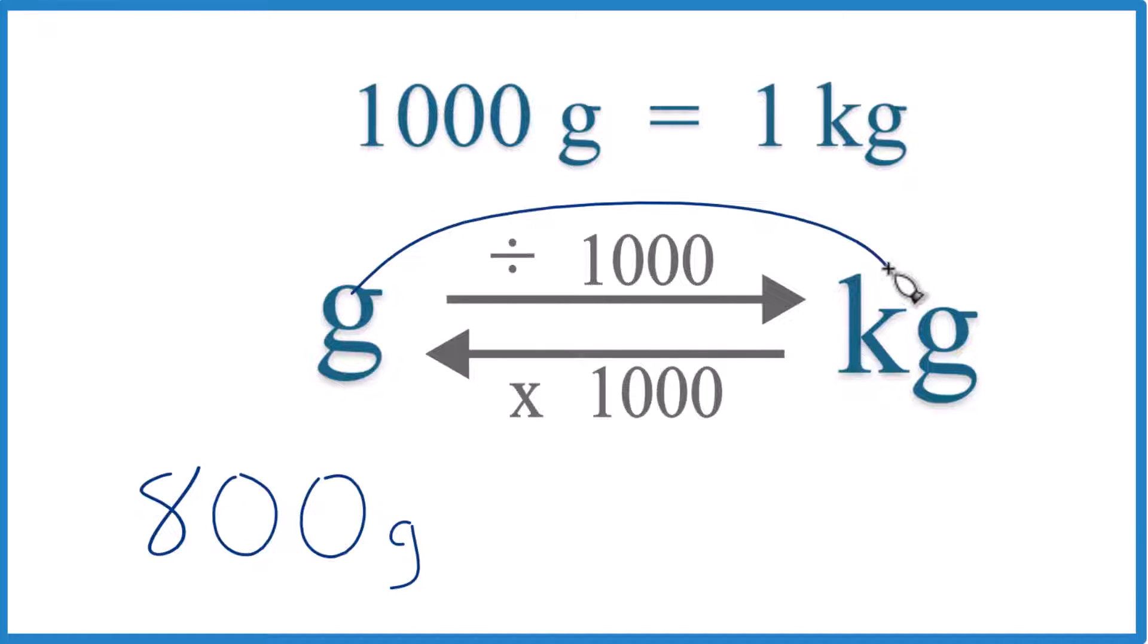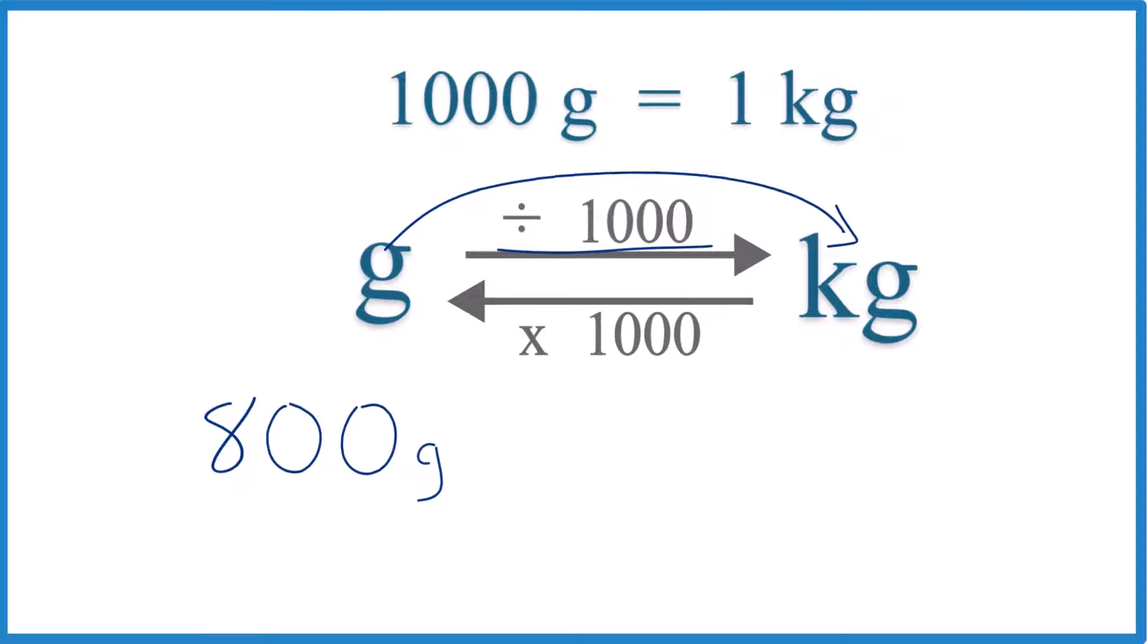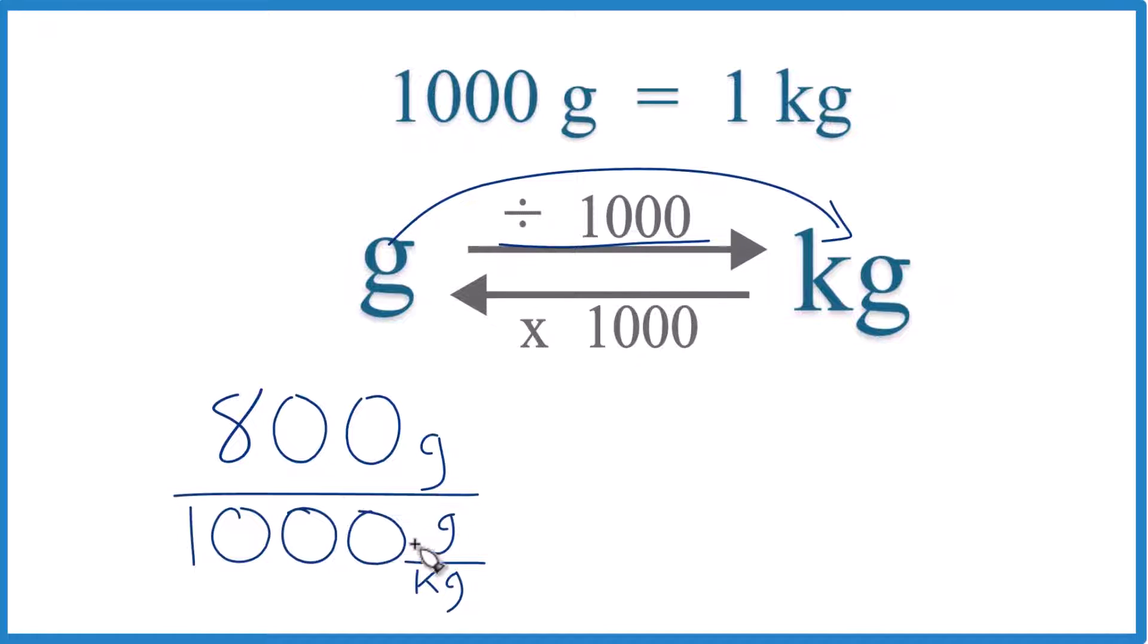We're going from grams to kilograms, so we're going to divide by 1,000, like this. Remember, we have 1,000 grams in one kilogram. That's the conversion factor. This way grams on the top and the bottom cancel out, and we're left with kilograms.